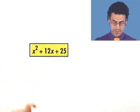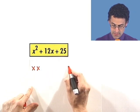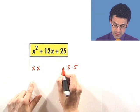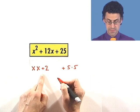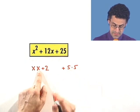Let's see if this is a perfect square. x times x, here I see 5 times 5. The question is, do I see in the middle 2 times 5 times x?